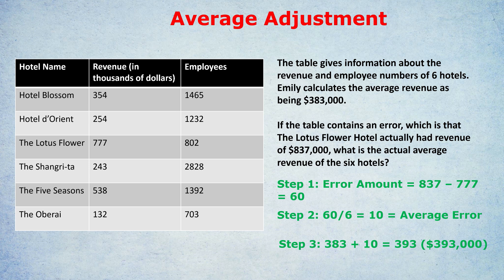To summarize — because I'm going to test you in about 30 seconds. Step one: find the error, either as given or by calculating the difference between what was presented in the chart versus the actual amount. Step two: divide that error by the number of terms to find the average error. Step three: either add or subtract the average error from the given average to find the true average. Using this method, one quick subtraction takes 10 seconds, dividing by six takes 2 seconds, and adding 10 takes 5 seconds — so it can really be done in about 20 seconds, saving a huge amount of calculation.